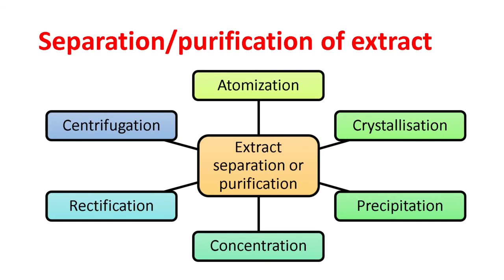Rectification and centrifugation: rectification is mainly used in the case of liquids which have a significant difference in boiling point. Centrifugation is used in the case of solids and liquids which have a significant difference in densities. So these are the various purification techniques, and depending upon the criteria and the need, one can follow these various purification techniques.